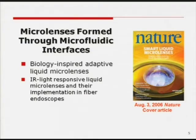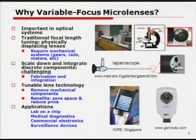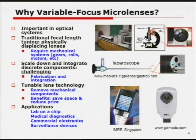As Chris said, the whole thing started with an accidental finding that eventually landed in Nature. The motivation for variable-focused microlenses: microlenses are important in all kinds of optical systems and most require focal length tuning. Traditionally this is done through mechanical systems such as gears, rails, and motors — for example, in a microscope you turn a knob. For micro-optic systems, you need to scale down and integrate all these discrete components, which presents a huge challenge in fabrication, integration, and power consumption. There are a few tunable lens technologies to remove mechanical components, save space, and reduce price.